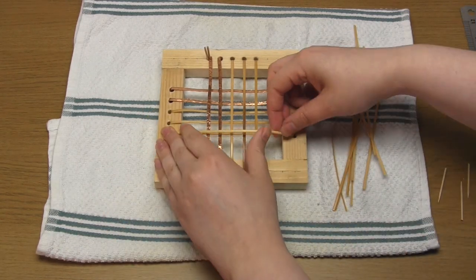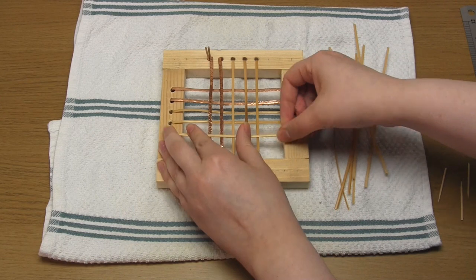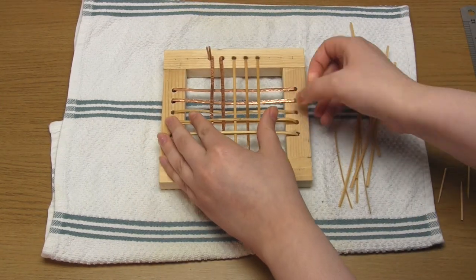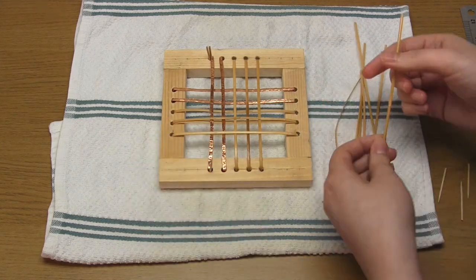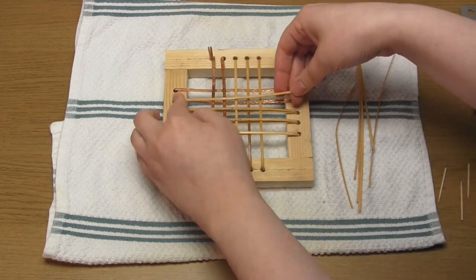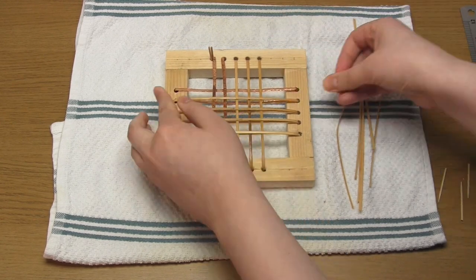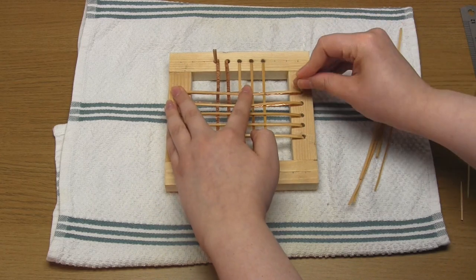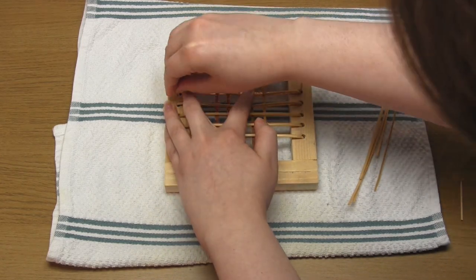And that's the second layer completed. For the third layer you just need to use cane so add five pieces of cane perpendicular to the last layer. You'll see that the ends of these pieces will go into the same holes as the first layer. And that's layer number three completed.